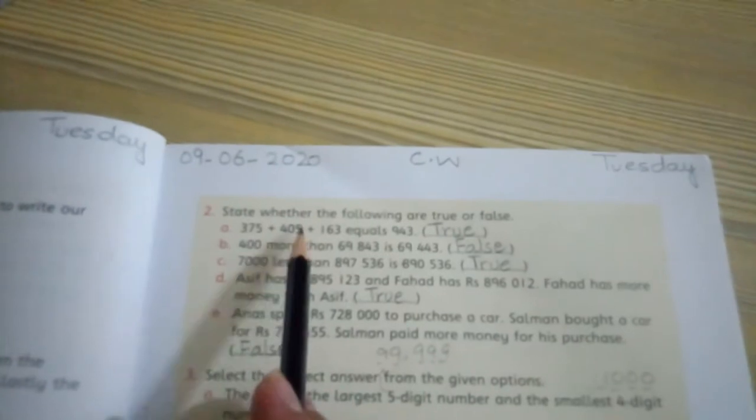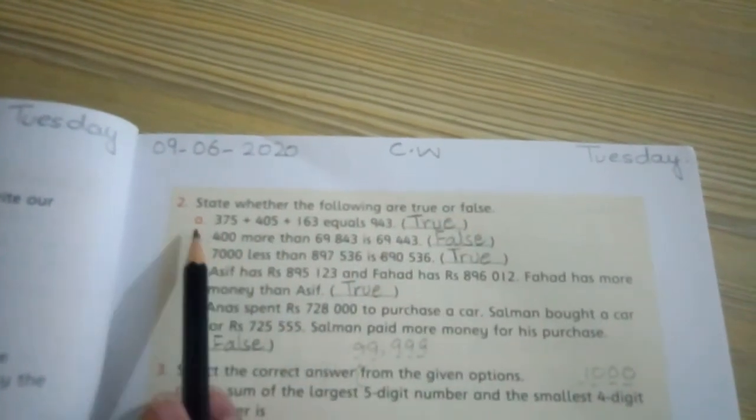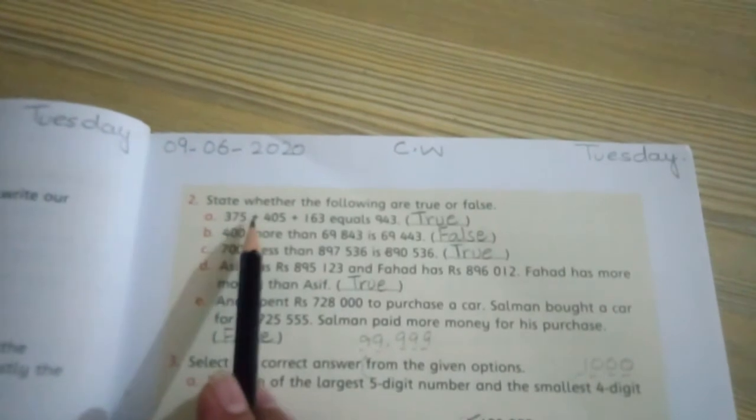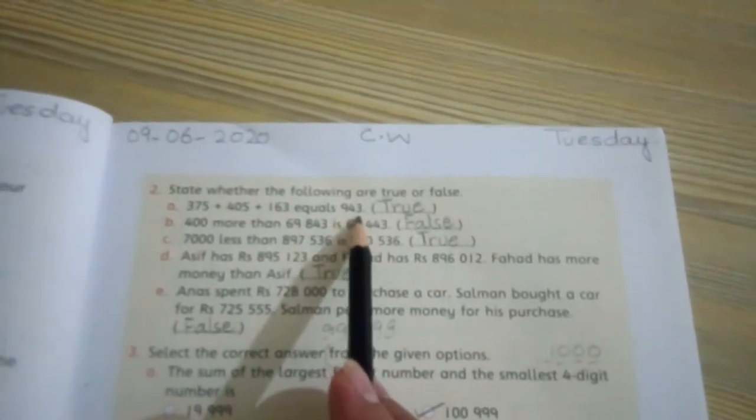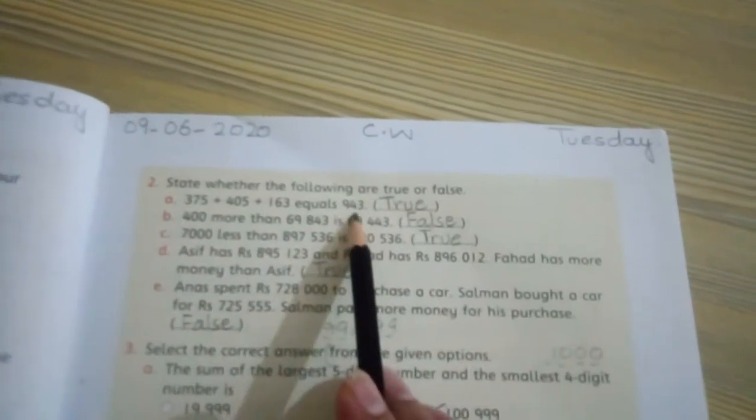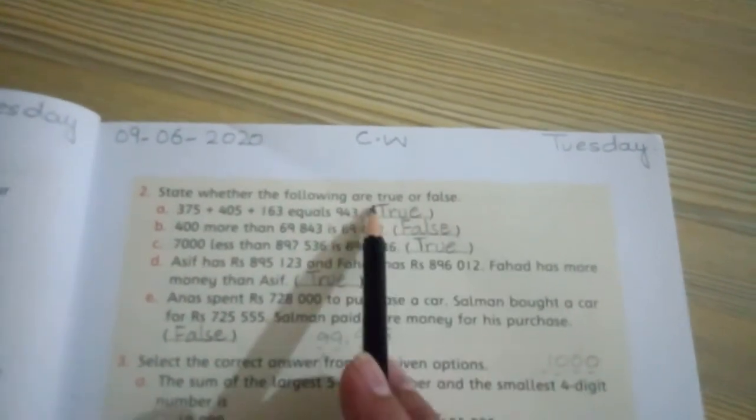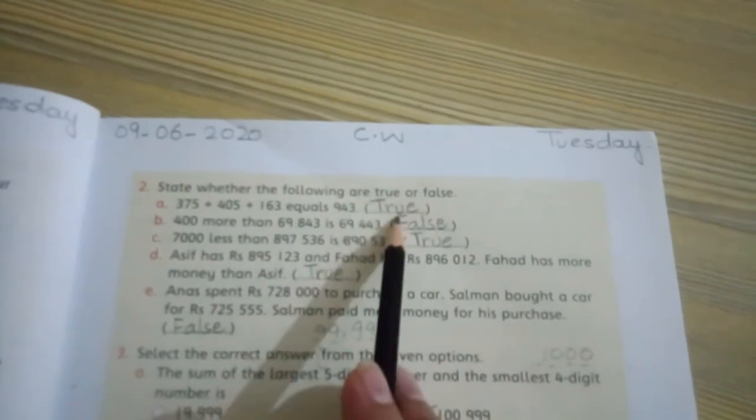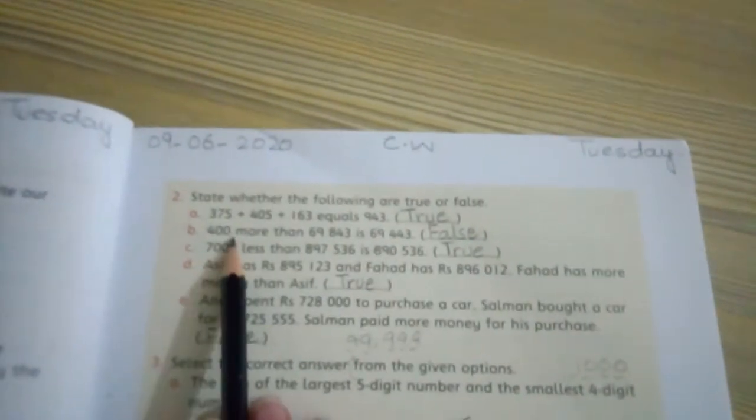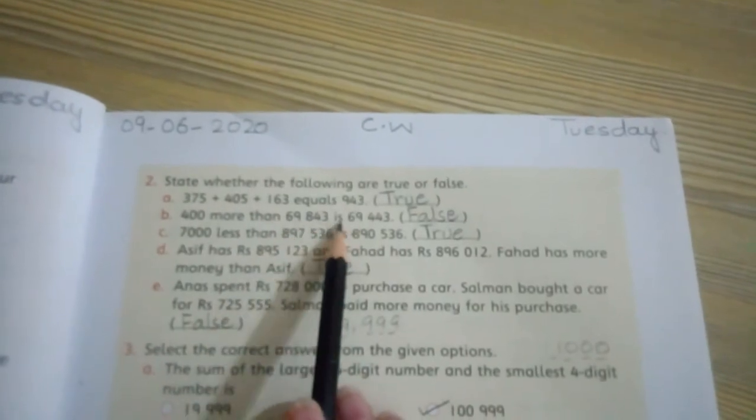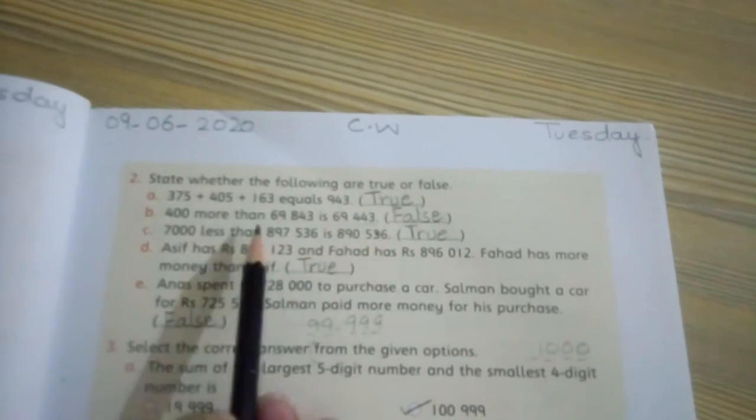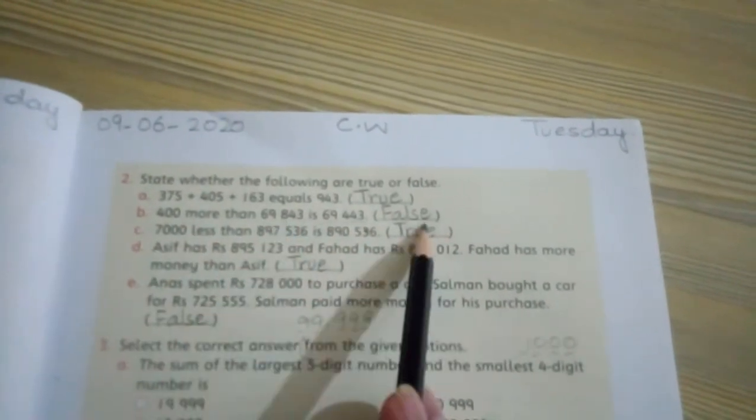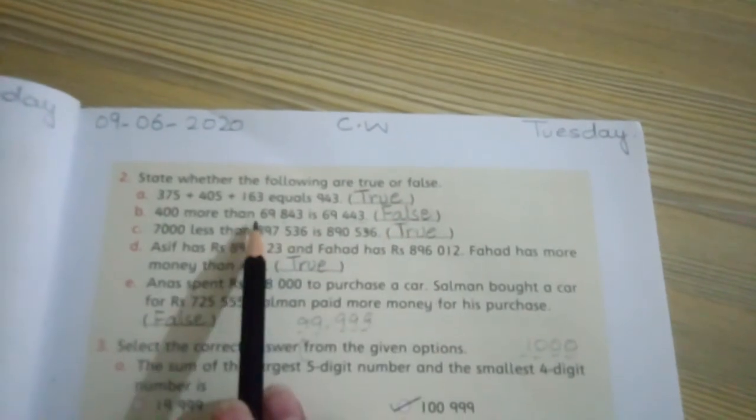You will prepare the page first by writing date, classwork, and day at the top. Question 2: State whether the following are true or false. Part A: When you add these three numbers (375 + 405 + 163) on rough paper, you will get nine hundred forty three, so this statement is true. Part B: Four hundred more than sixty nine thousand eight hundred forty three is sixty nine thousand four hundred forty three. This is false because when you add four hundred, you get a different answer.